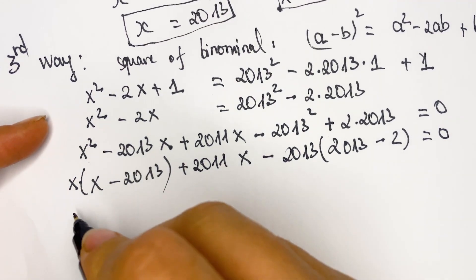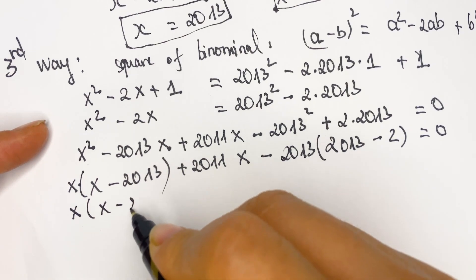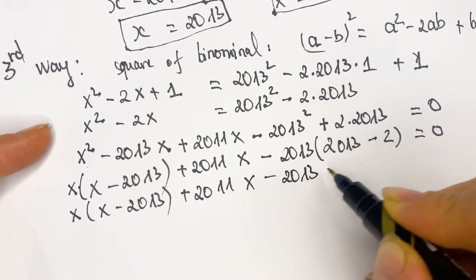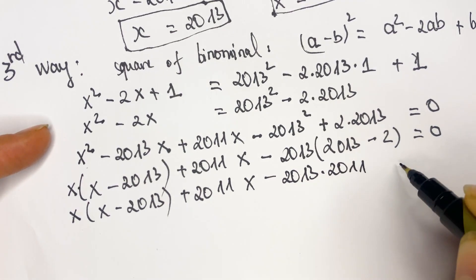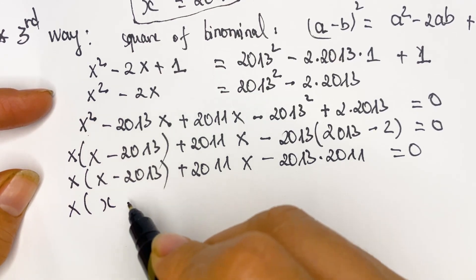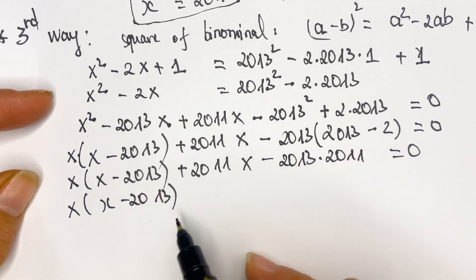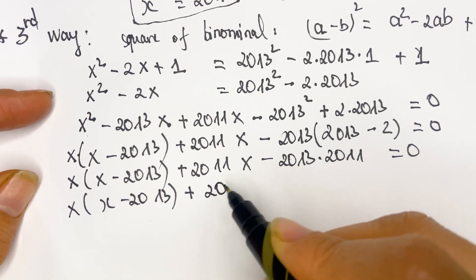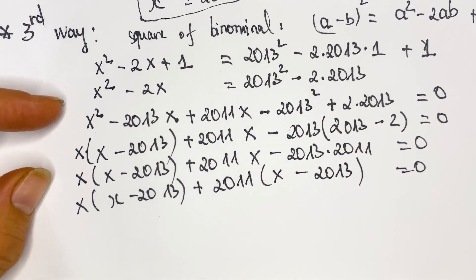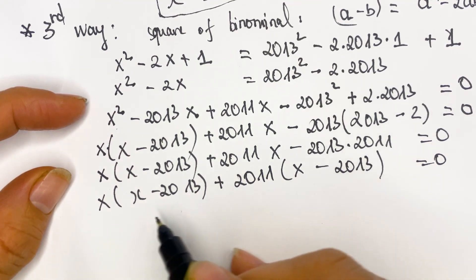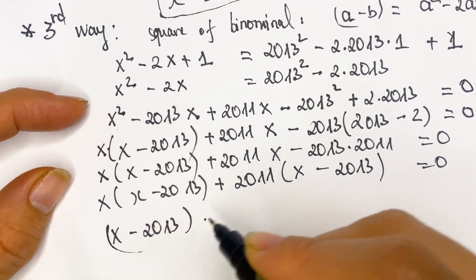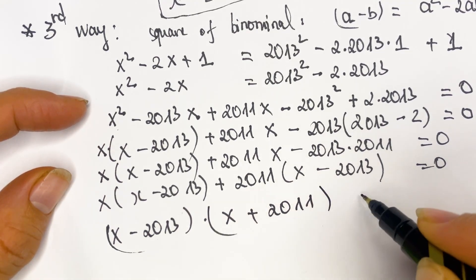So we have x times (x minus 2013) plus 2011 times (x minus 2013) equals zero. We can see that (x minus 2013) is a common factor, so we factor it out: (x minus 2013) times (x plus 2011) equals zero.